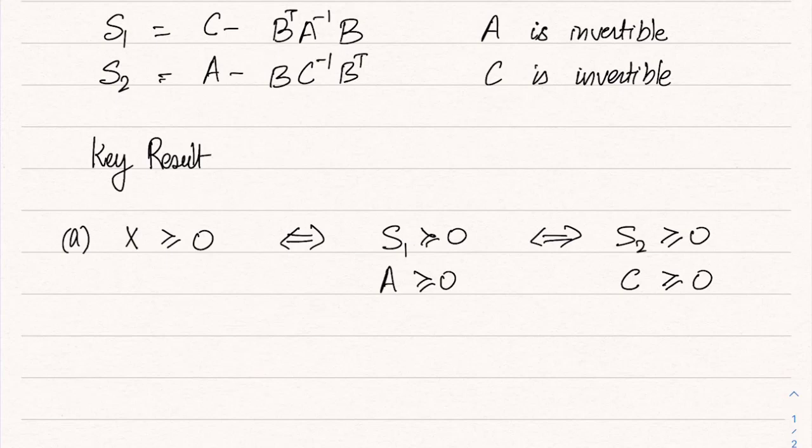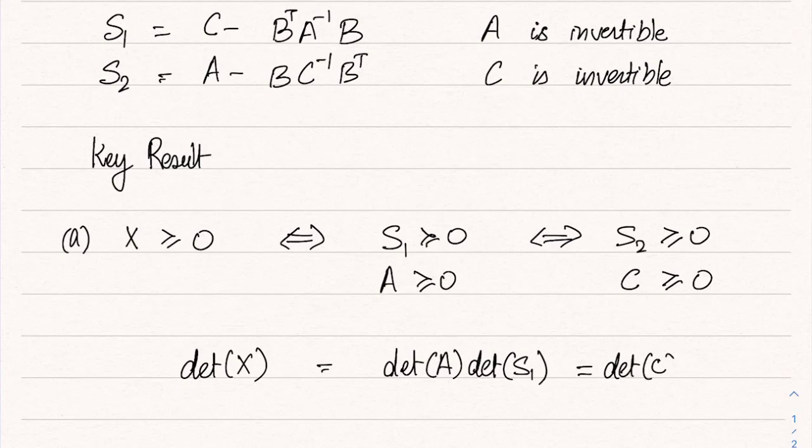In other words, starting from or given the positive semi-definite property of X, you can infer the positive semi-definite property of S1 and A and vice versa. And there is another result which says that the determinant of X is equal to the determinant of A times the determinant of S1, which is equal to the determinant of C times the determinant of S2. So this is the second result.